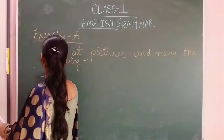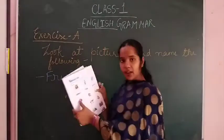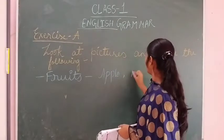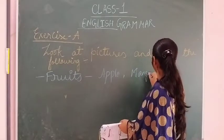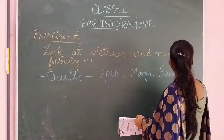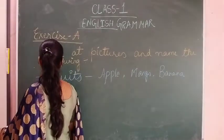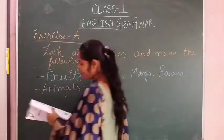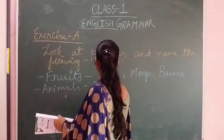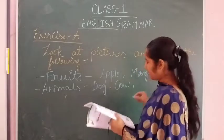Now third one is fruits. First one is apple. Second one is galmo. And third one is banana. Now for animals: first one is animals — half animals, completely animals. Second one is palm, and third one is tiger.